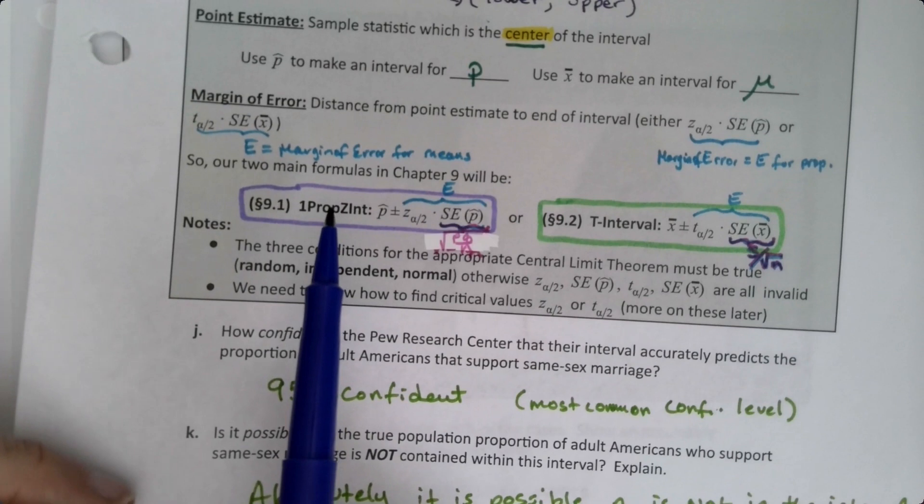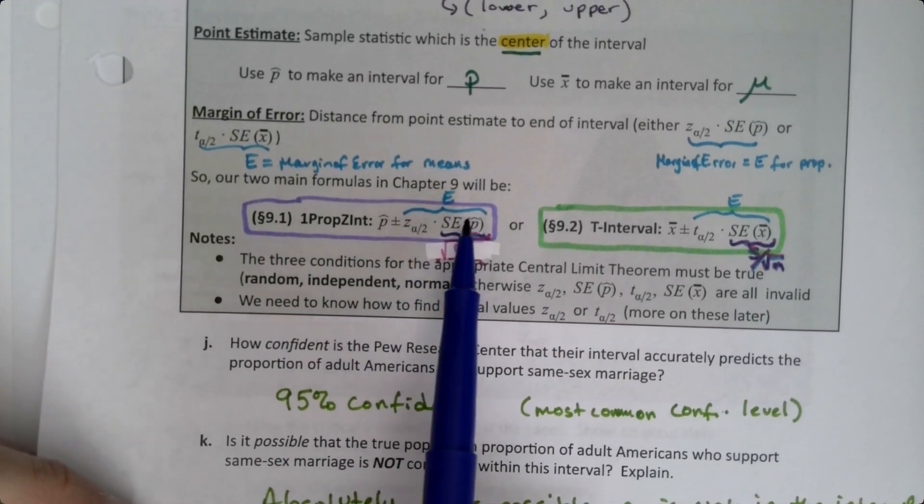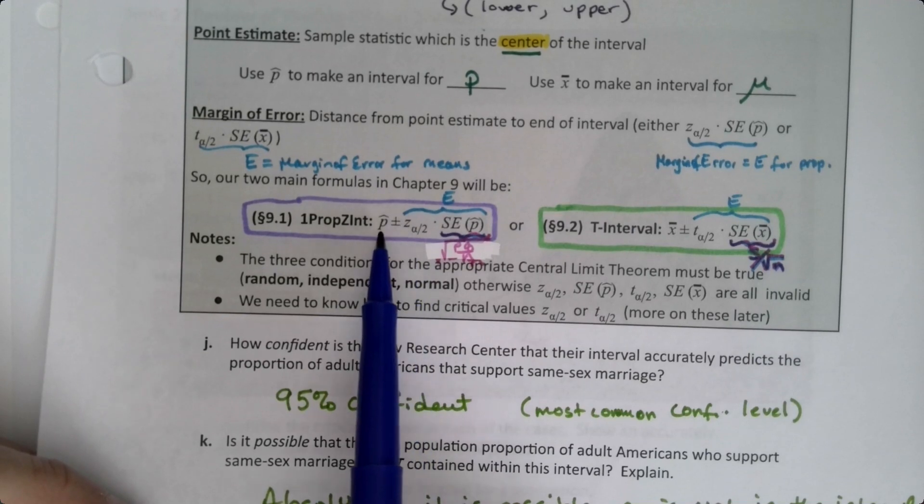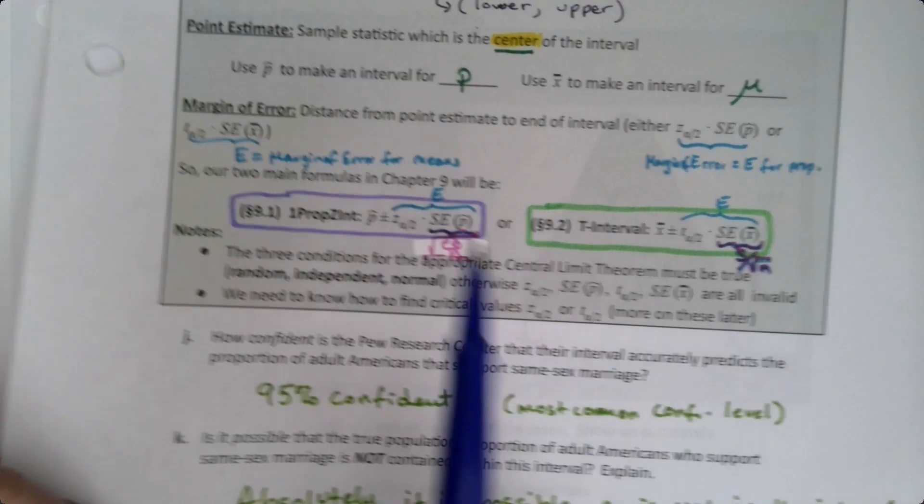Now, why they're so important: if we go back and look at the formula for the one proportion z-interval, the confidence interval we have to make in this section, you can see that z is part of that formula. So we need to know how to find z in order to be able to use this formula.